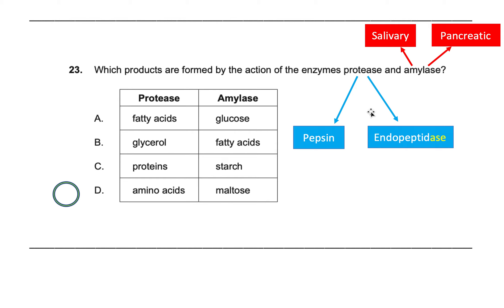Try this one yourself first. Bear in mind that protease is a class of enzymes — it includes two enzymes you need to know: pepsin and endopeptidase. Note that endopeptidase doesn't end in '-ase' but it is still technically an enzyme, so don't always assume that if a word doesn't end in '-ase' it's not an enzyme. Amylase includes two enzymes: salivary amylase, made in the mouth by the salivary gland, and pancreatic amylase, made by the pancreas.